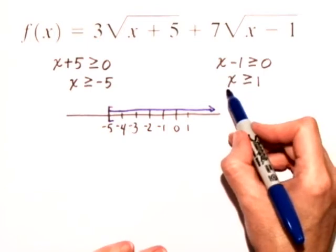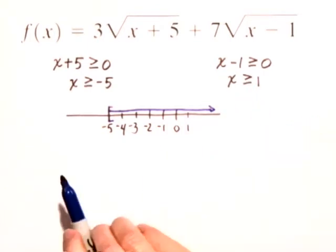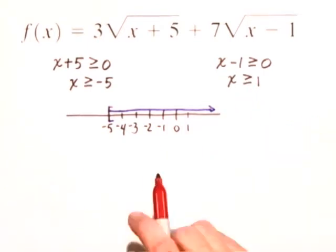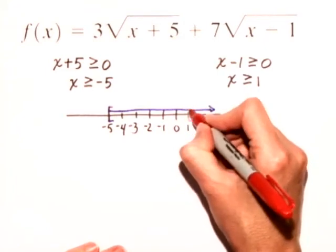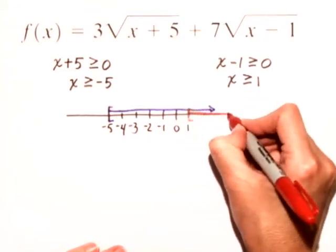And the other piece of information we have is that x ≥ 1, which looks like this.